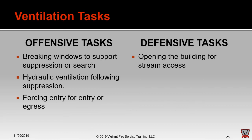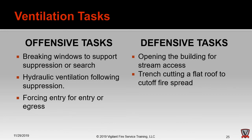Defensive ventilation tasks must still be considered even in defensive mode. Pouring water streams on the exterior of a closed building is not effective or efficient, so we need to open the building for stream access — breaking windows, cutting holes in metal buildings. Another defensive ventilation task is the trench cut: cutting a flat roof from one end to the other to cut off fire spread in a common cockloft extending across multiple buildings in a block.